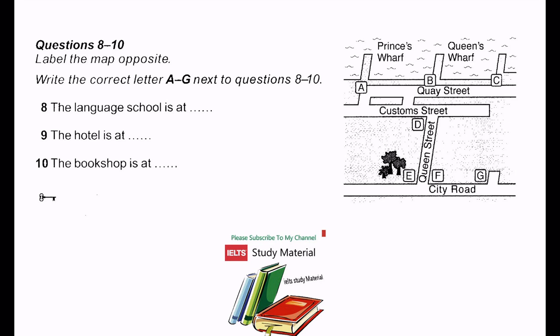Now listen and answer questions 8 to 10. Hello, Sue. It's Angelo from Cosmos Travel here. I've booked your flight and I've found you an English college called the Harbour Language Centre. Great. Where exactly is that? Well, have you got that little map I gave you yesterday? Yes. You see where the harbour is with the three wharves and the water? Yes. Got that. OK. There are two parallel streets. Quay Street, that's Q-U-A-Y, and Customs Street. The building where the college is located is on Quay Street, opposite Prince's Wharf.